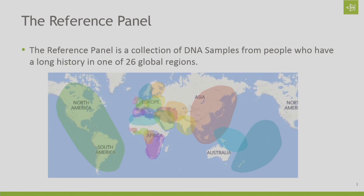To understand what's going on with your ethnicity estimate, let's talk about the reference panel. This reference panel is a collection of people from around the world. We have 26 different regions where we've collected DNA samples from people who have a long history in a particular region. For example, we might have someone who has had all four of their grandparents or all eight of their great-grandparents born in Norway or in the British Isles. Once we have these samples, we can assume their DNA is representative of people who have lived there for a long time.